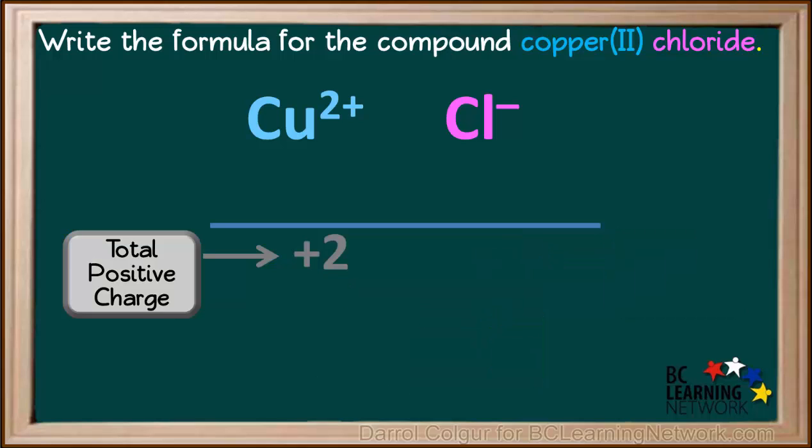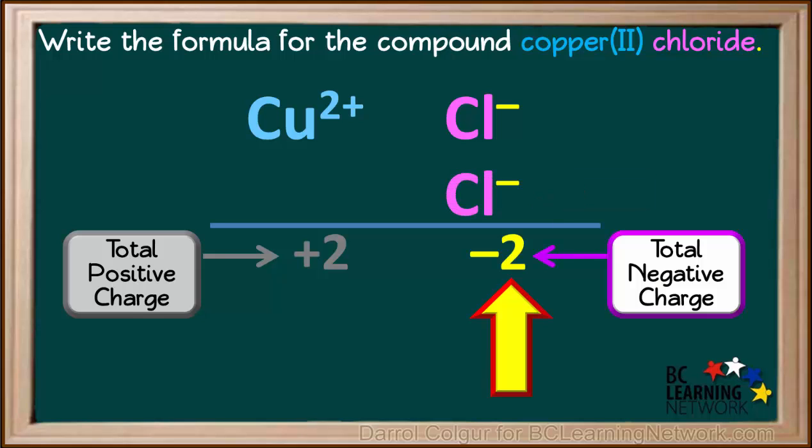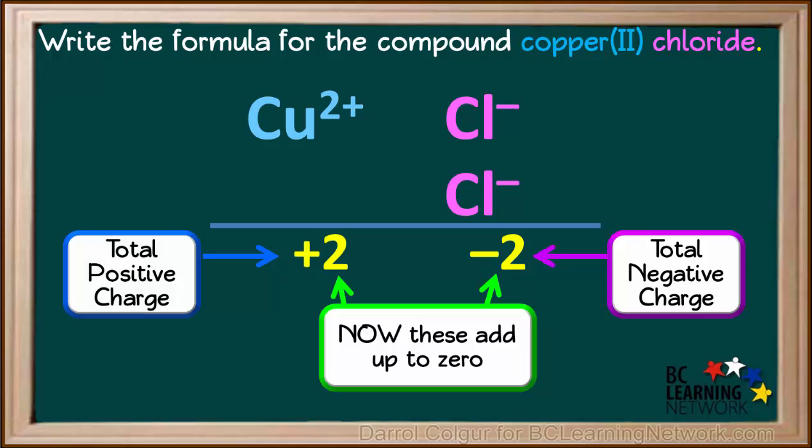To make the charges balance, we add another chloride ion. The total negative charge is now negative 2. Now the positive and negative charges are balanced. They add up to 0.